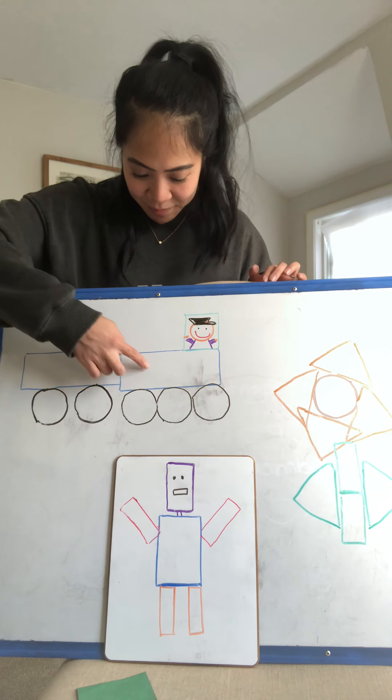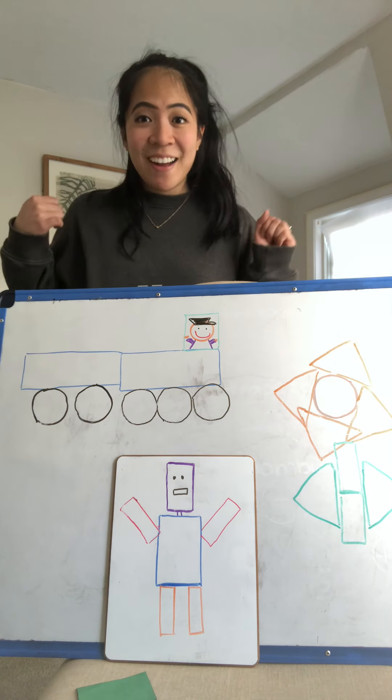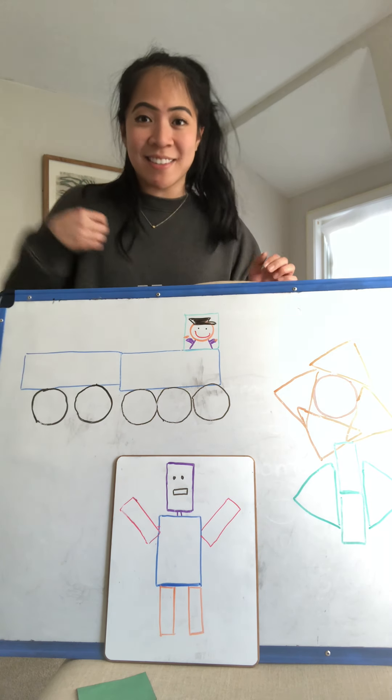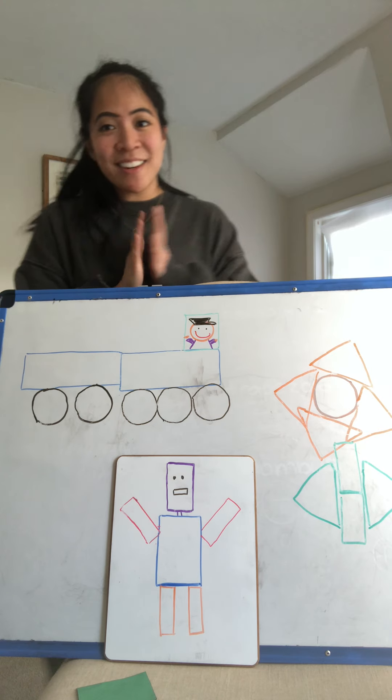What shape do you see right here? A rectangle. And what shape did I use for the wheels? Circle.